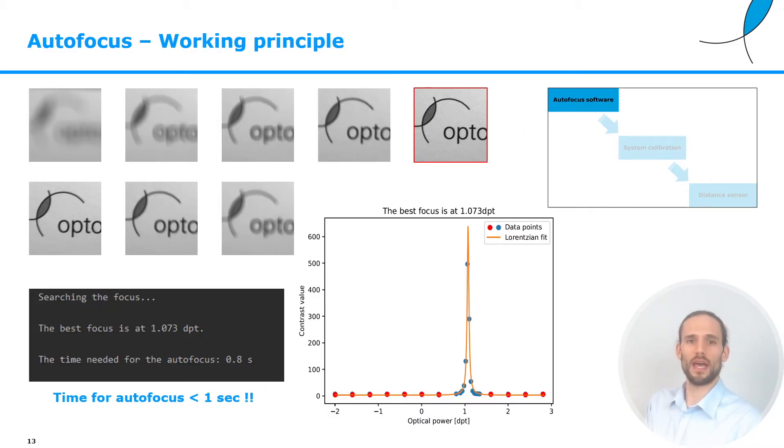Here we have an example of a run of such an autofocus routine with on the top the images taken at different optical powers. Even though we have to acquire a lot of images with this approach, this autofocus software turns out to be quite fast, because our lenses are very fast. They can focus within milliseconds. Usually the time to run the autofocus is on the order or even smaller than a second.